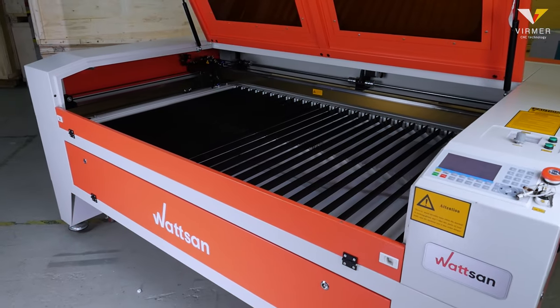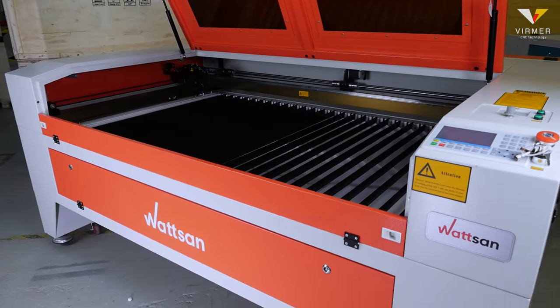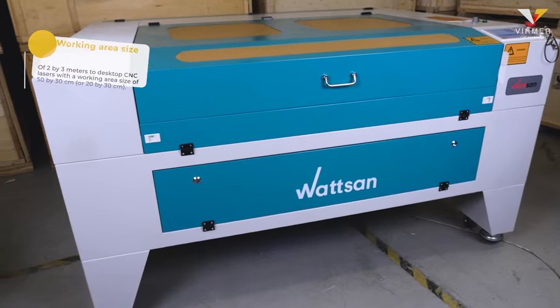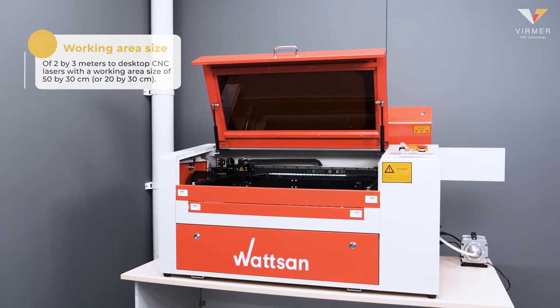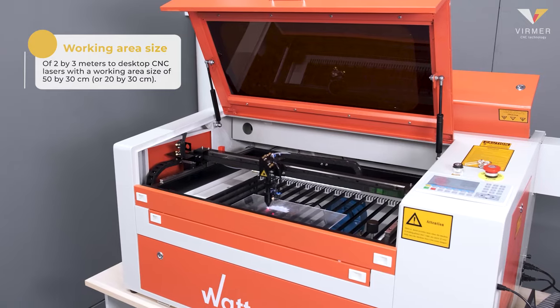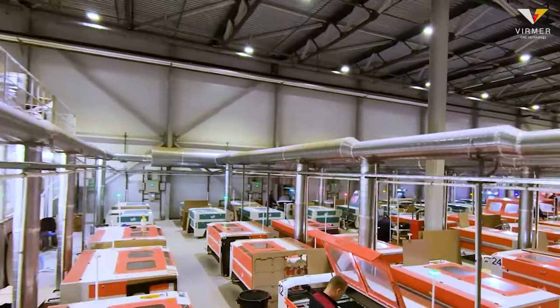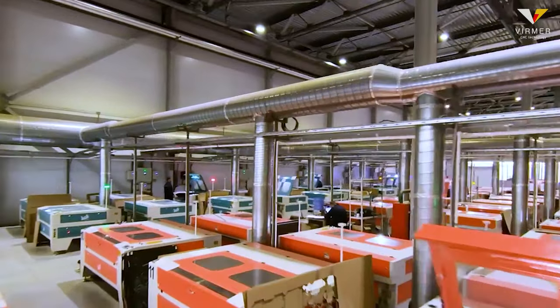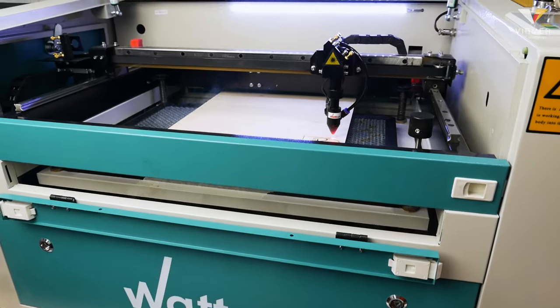In terms of size, the machines range from wide format with a working area size of 2 by 3 meters to desktop CNC lasers with a working area size of 50 by 30 centimeters or 20 by 30 centimeters. Therefore, you can open both a mass production hall and a small business at home.